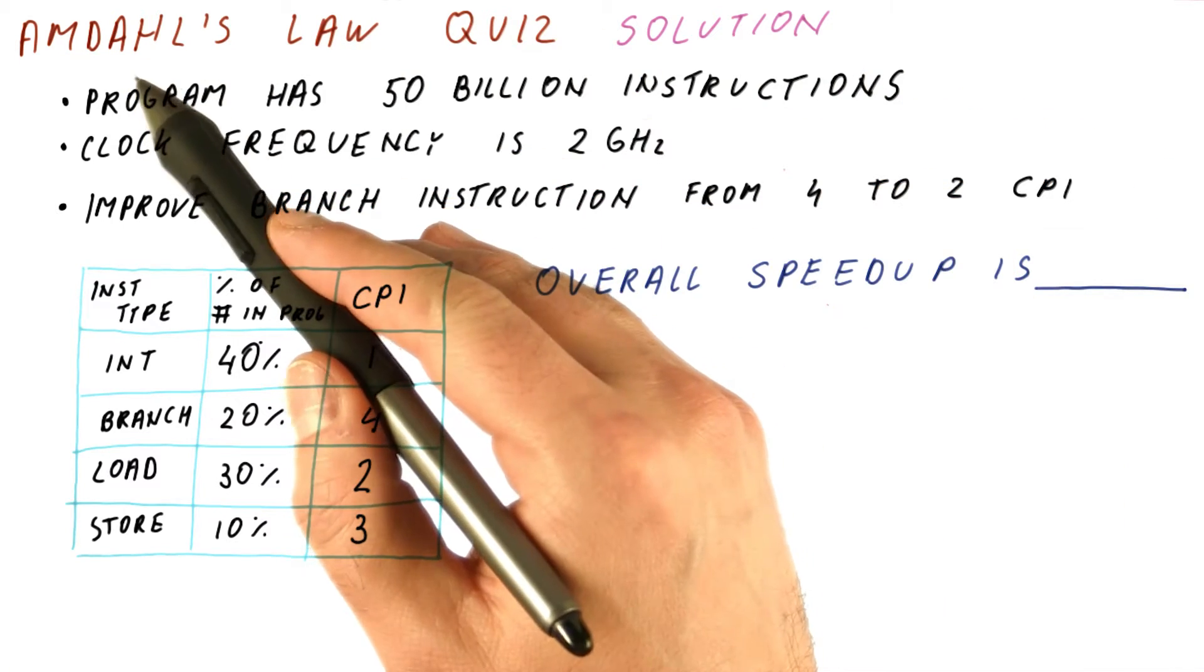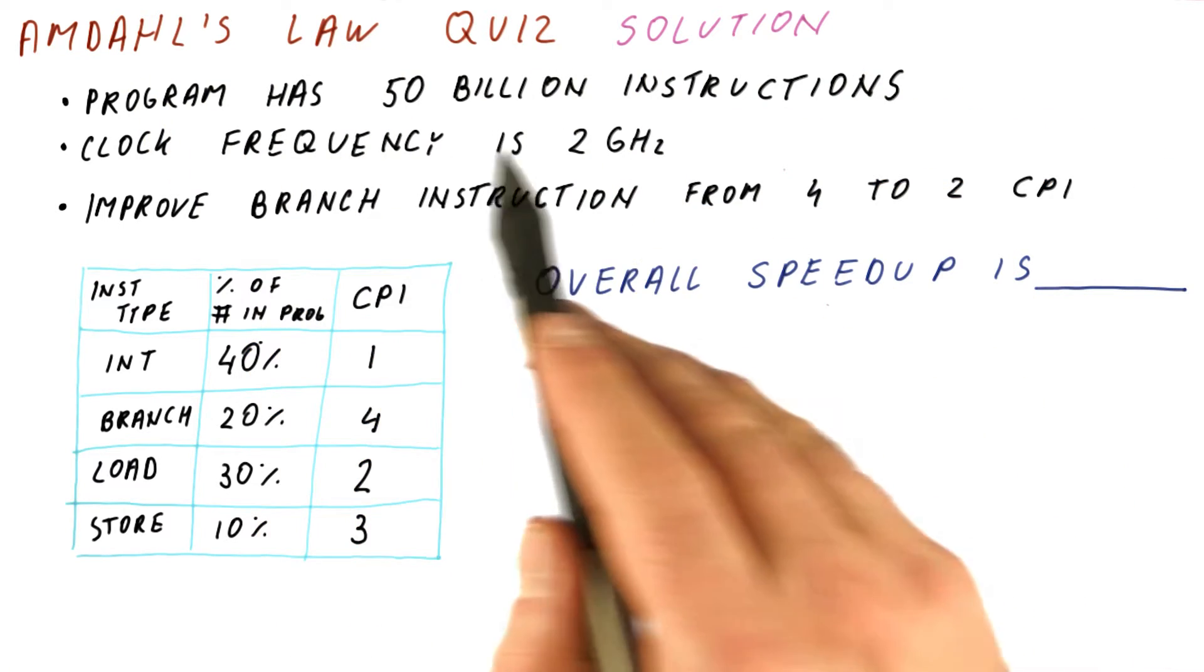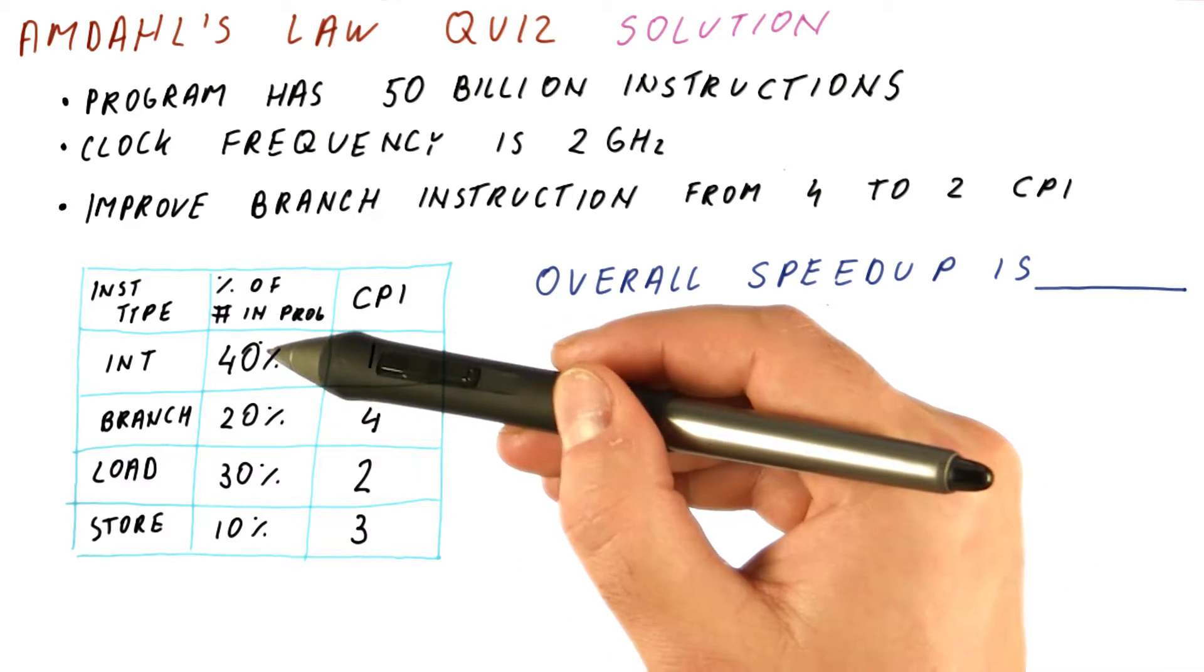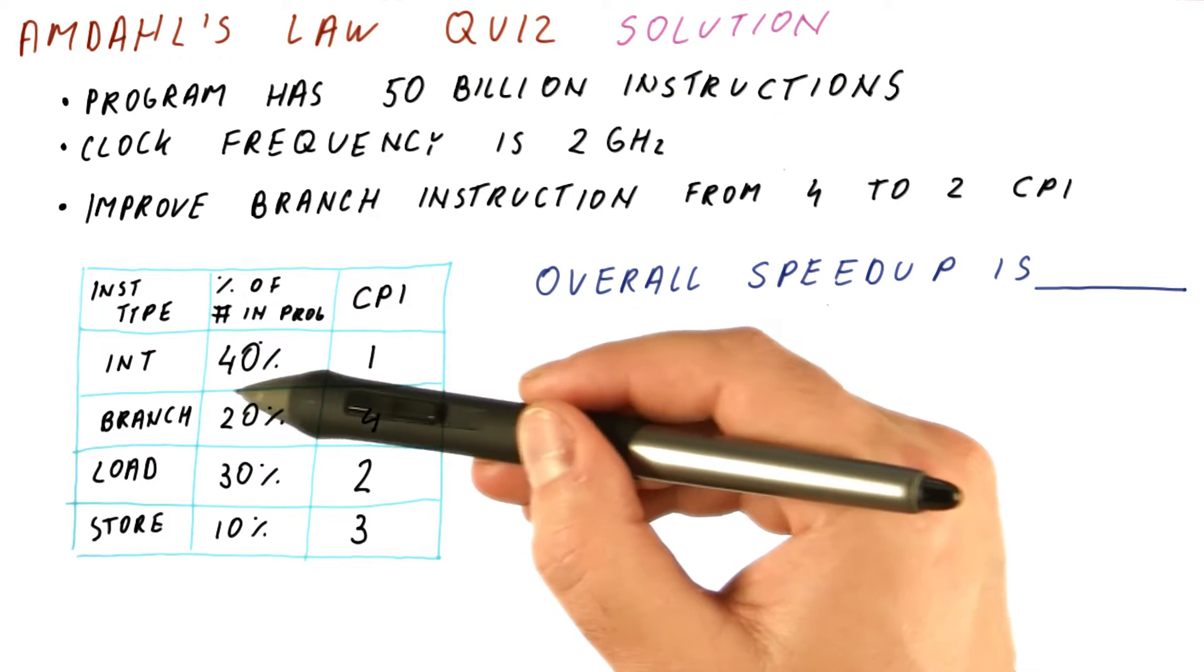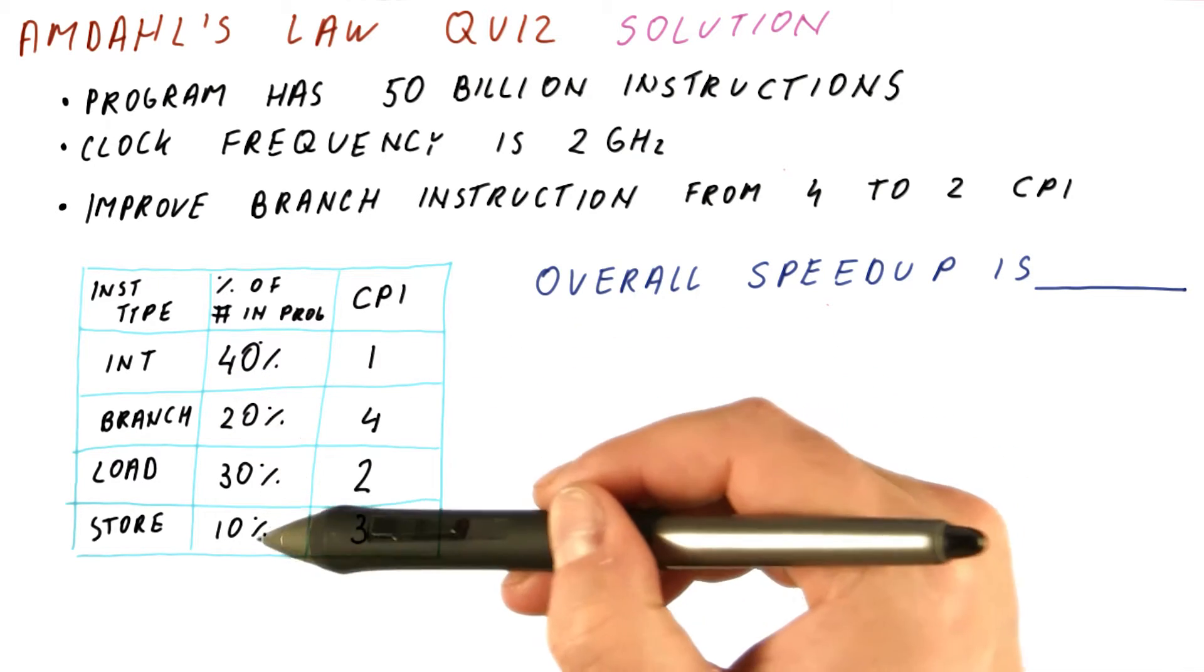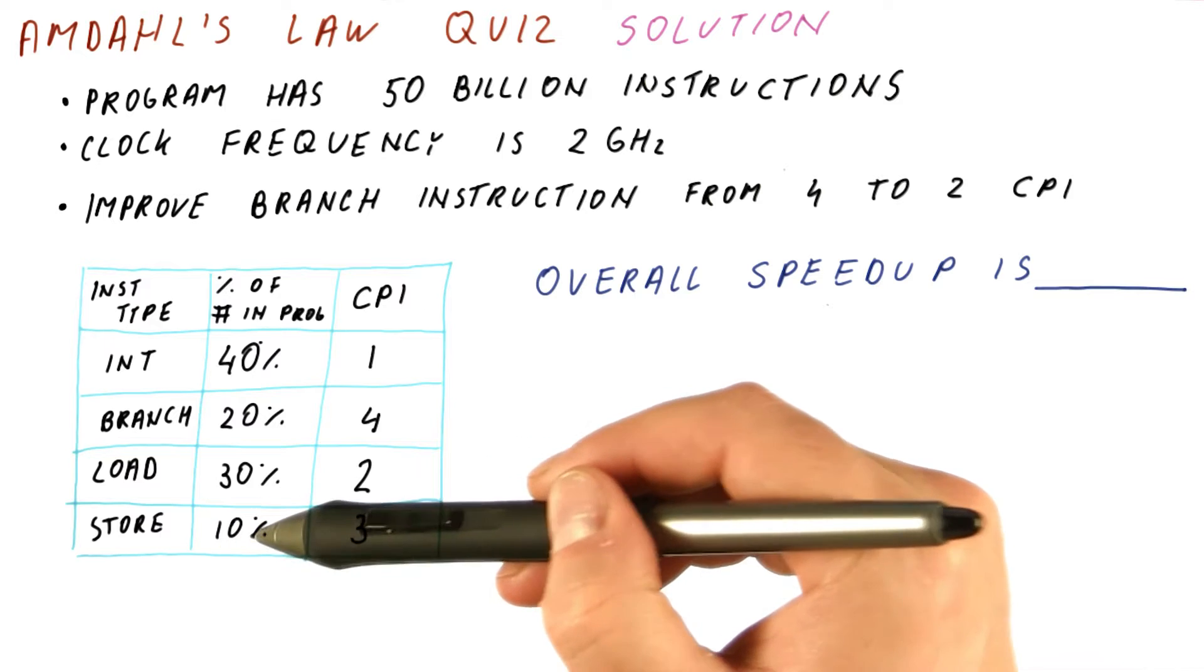So let's discuss the solution to our Amdahl's law quiz. The program has 50 billion instructions. This is how many instructions according to the instruction count. Our integer, 40%. Branches are one-fifth of our instructions. Stores are 10%, and so on.